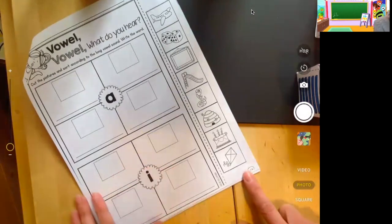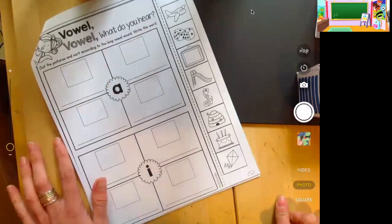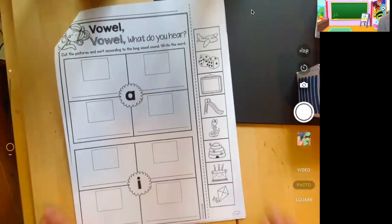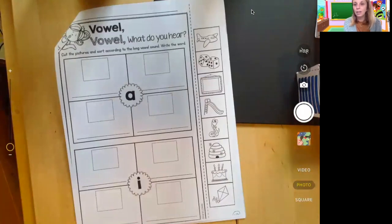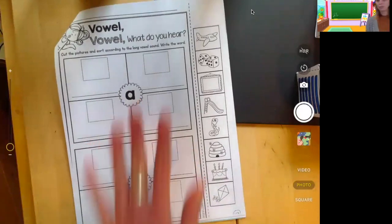So page 19, and you'll see vowel, vowel, what do you hear? So sort them according to the long vowel sound that you hear. So if you hear A in the word, then you're going to cut the picture, put it here, and try your best to write the word.